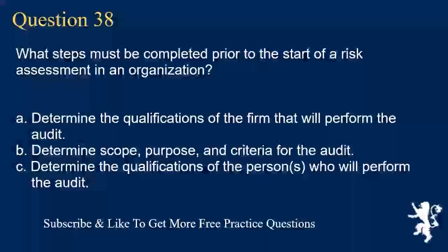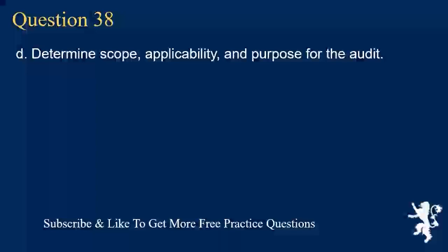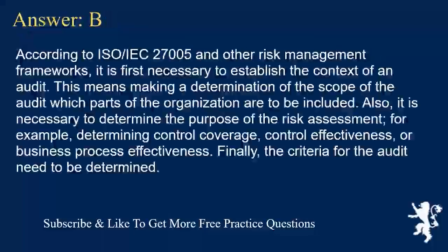Question 38. What steps must be completed prior to the start of a risk assessment in an organization? A. Determine the qualifications of the firm that will perform the audit. B. Determine scope, purpose, and criteria for the audit. C. Determine the qualifications of the persons who will perform the audit. D. Determine scope, applicability, and purpose for the audit. Answer B. According to ISO/IEC 27005 and other risk management frameworks, it is first necessary to establish the context of an audit — meaning the scope of the audit and which parts of the organization are included. Also, it is necessary to determine the purpose of the risk assessment, for example determining control coverage, control effectiveness, or business process effectiveness. Finally, the criteria for the audit need to be determined.